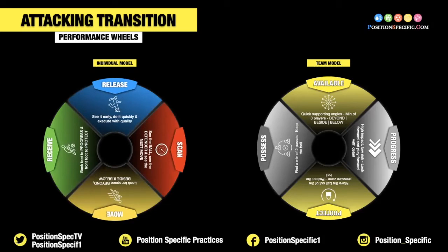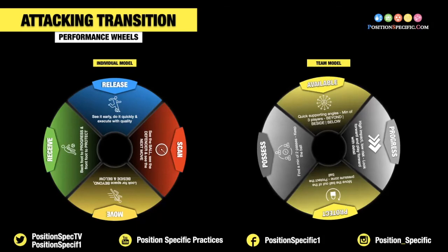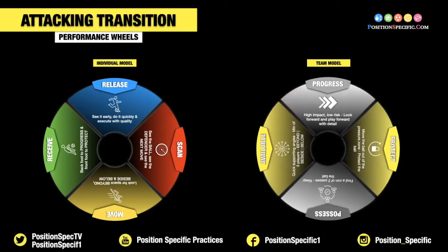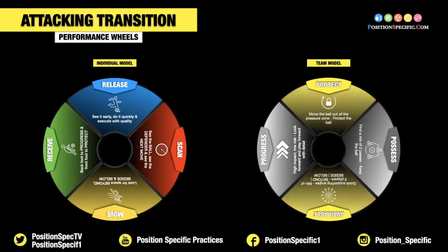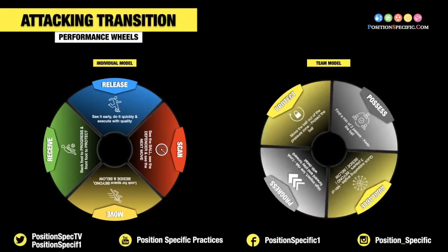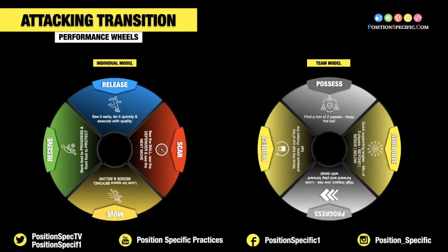Taking these four individual factors, we then look to our team model. Collectively, can we get available with quick supporting angles, a minimum of three players, beyond, beside, or below the opposition? Can they progress forward — high impact, low risk, look forward and play forward with detail? We might need to protect, so if we can't play forward, can we move the ball out of the pressure zone and maintain possession? And possess — can we find a minimum of two passes to keep the ball, moving it away from the opposition's press so we can maintain it and look forward?